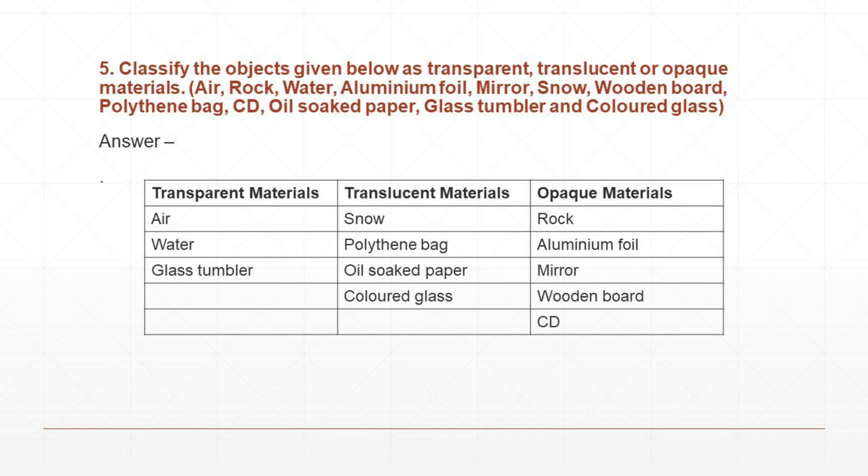Classify the objects given below as transparent, translucent, or opaque materials: air, rock, water, aluminium foil, mirror, snow, wooden board, polythene bag, CD, oil-soaked paper, glass tumbler, and coloured glass. Transparent materials: air, water, glass tumbler. Translucent materials: snow, polythene bag, oil-soaked paper, coloured glass. Opaque materials: rock, aluminium foil, mirror, wooden board, CD.